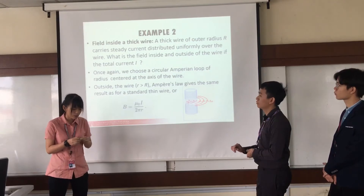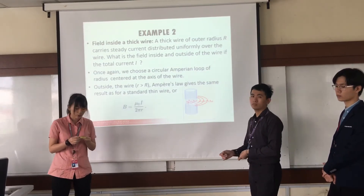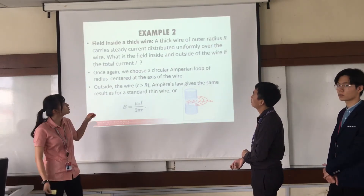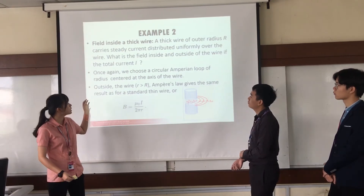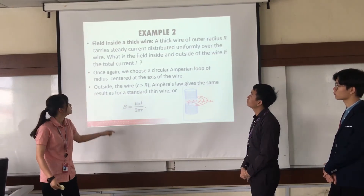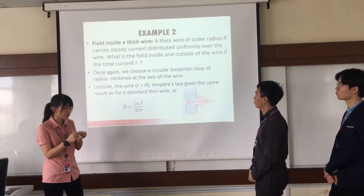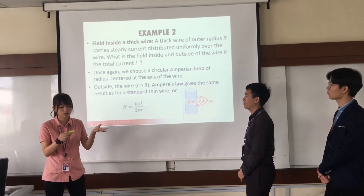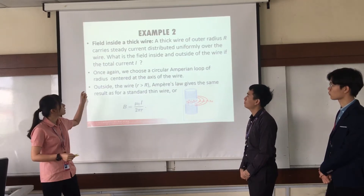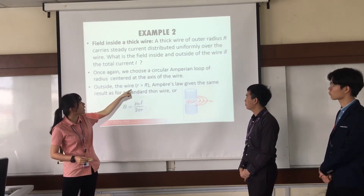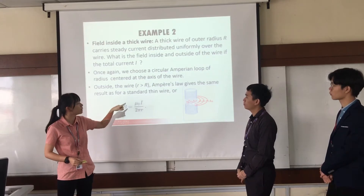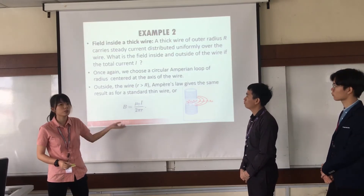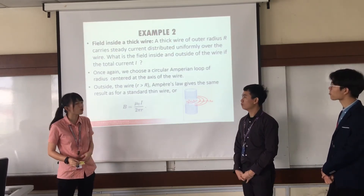In Example 2, we look at a thick wire and determine the field inside and outside of it. Outside, when the small r is greater than the big R, Ampere's law gives the same result as for a standard thin wire from the previous slide: B equals μ₀I over 2πr.